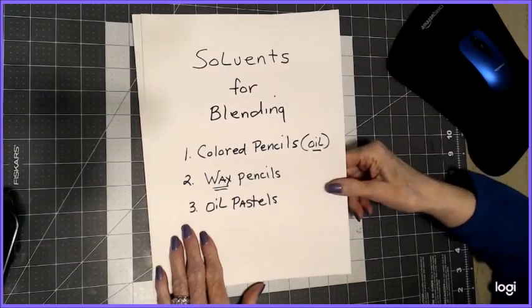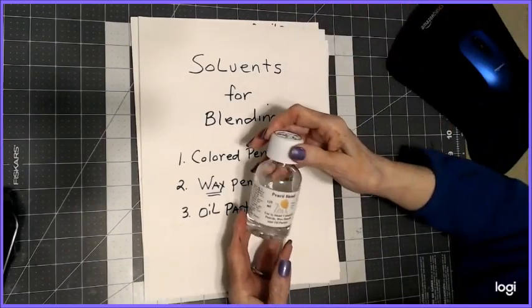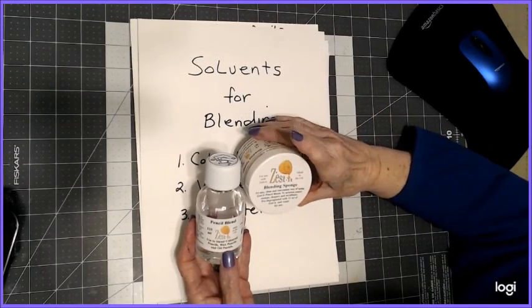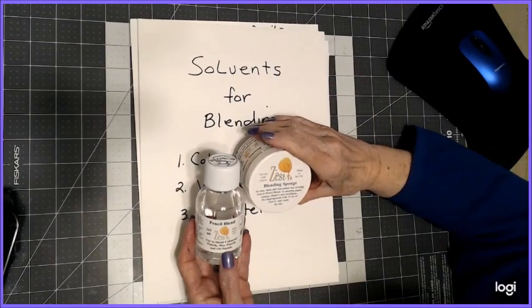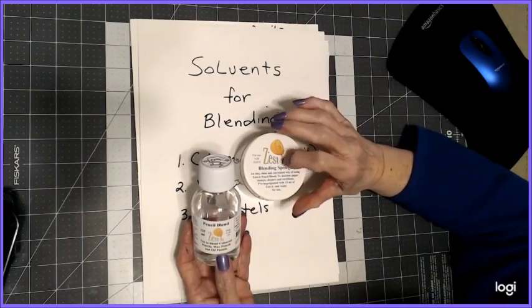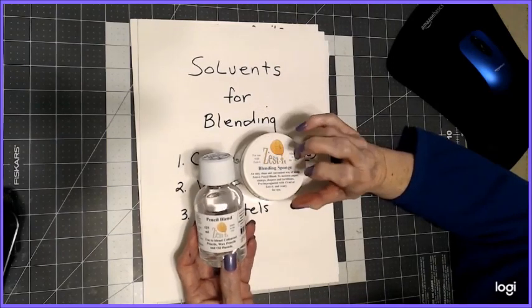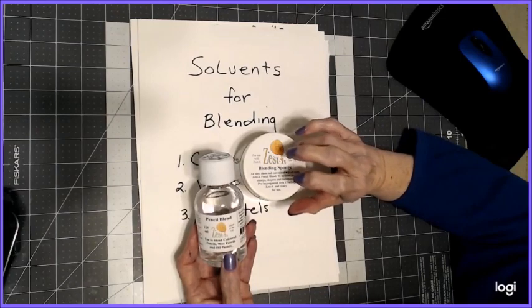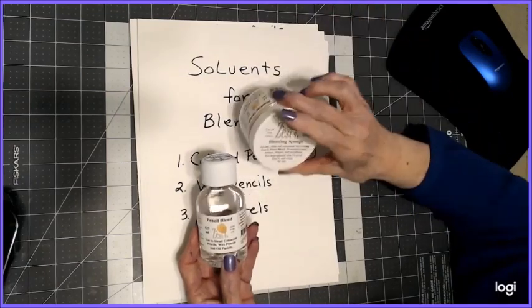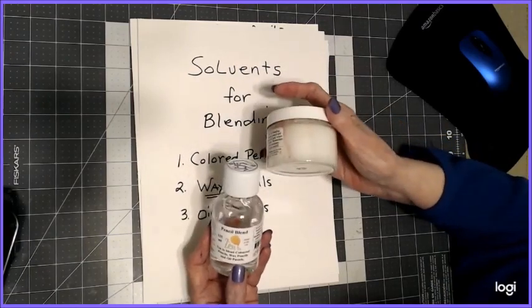The next thing I'd like to show you is Zest-It pencil blend. This is something new to me, and I had to order it from the UK, but I got it from Jackson Art. You can go on the internet and put in Jackson Art, and you'll be able to buy it cheaper than on Amazon, and the shipping was much less.